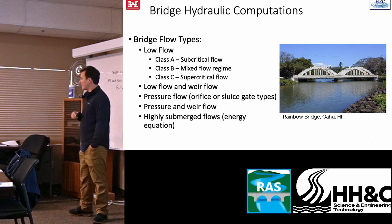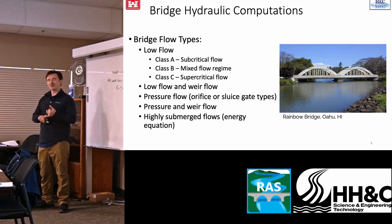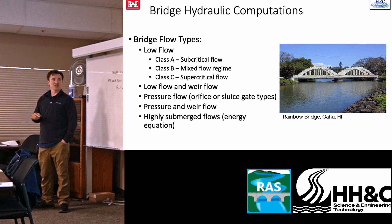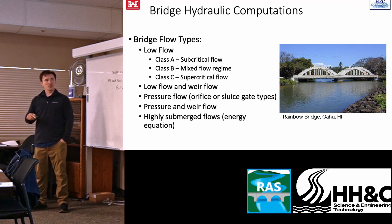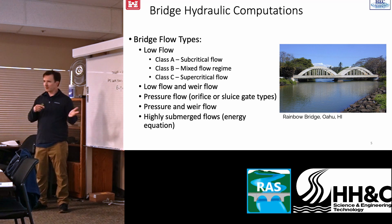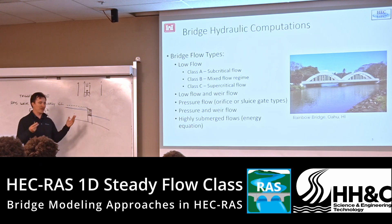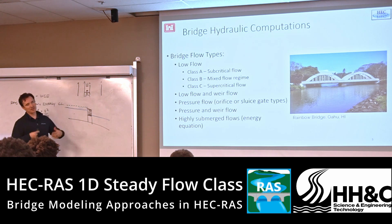There are different flow types at bridges. Low flow has different classes depending on whether it's subcritical through the bridge, mixed flow, or supercritical. You can also have low flow with the bridge behaving like a weir, pressure flow where the bridge deck is hit and flow is pressurized underneath, and highly submerged flows for low flow bridges designed for low flows that get highly submerged during floods — those need to be treated differently.